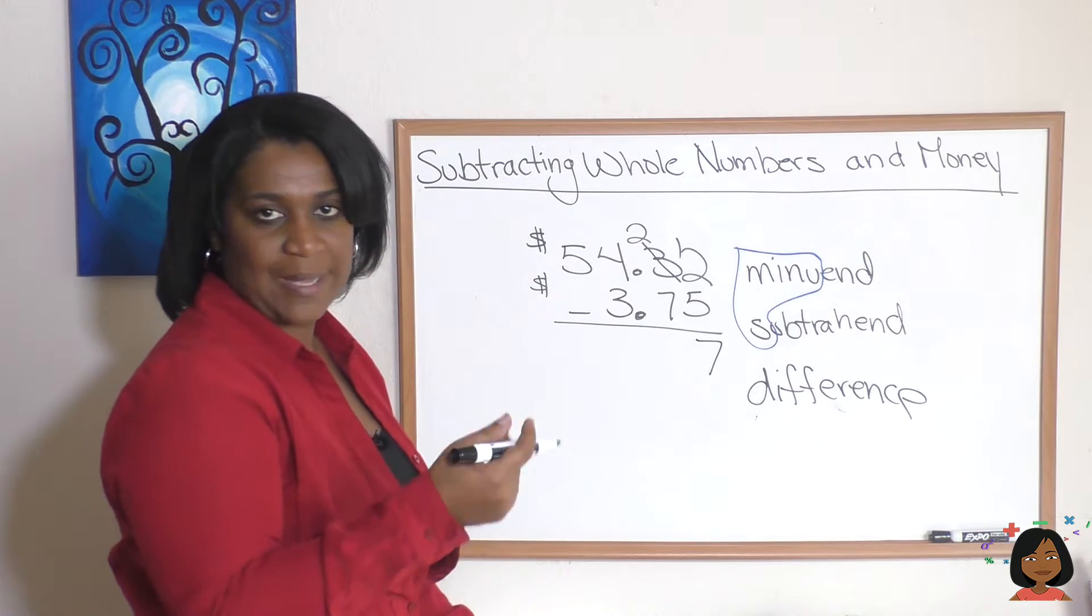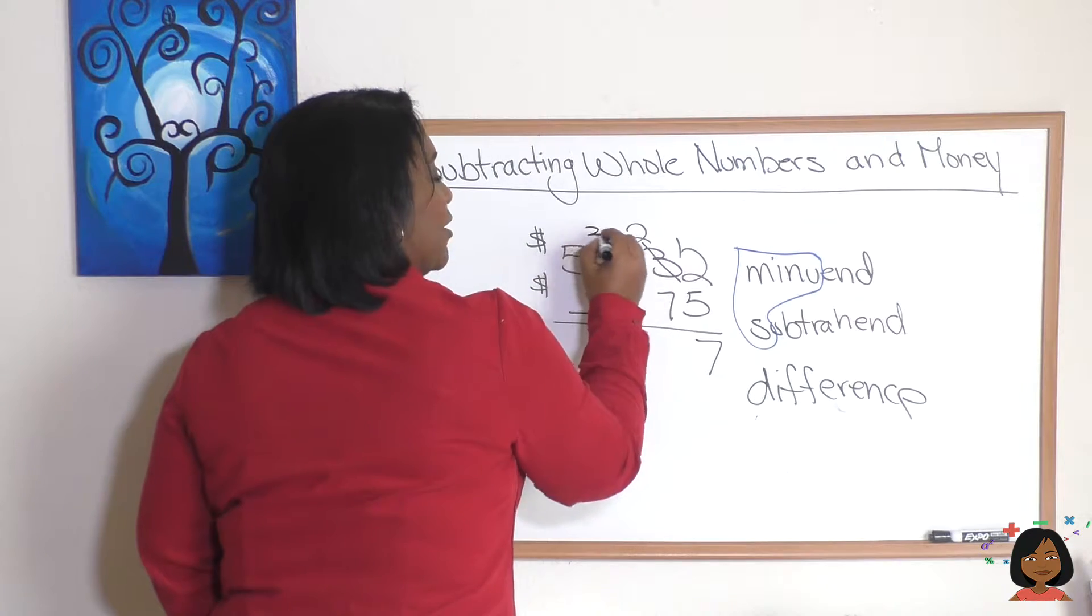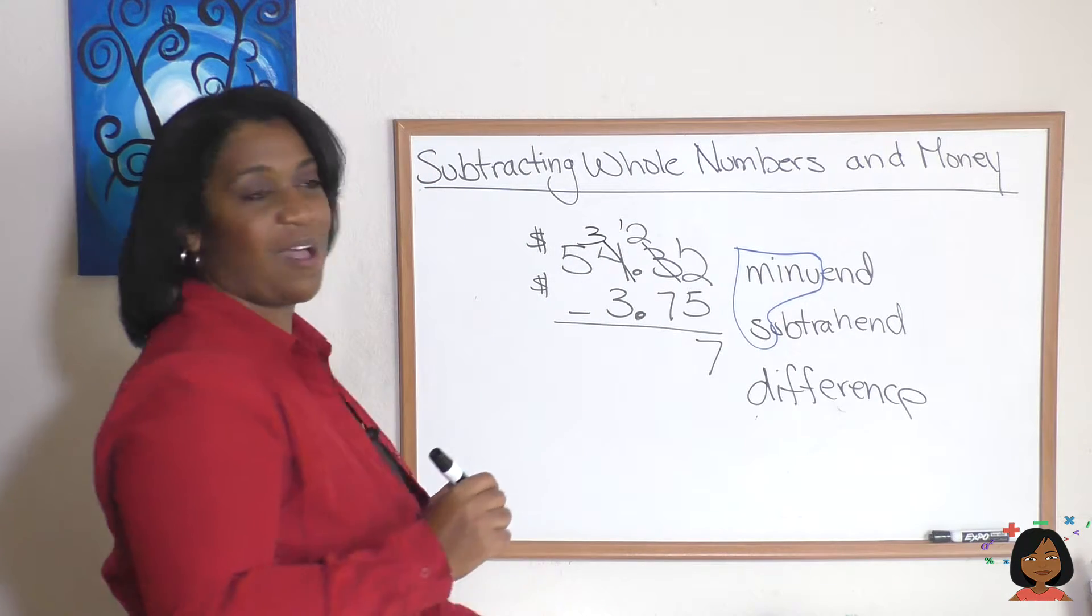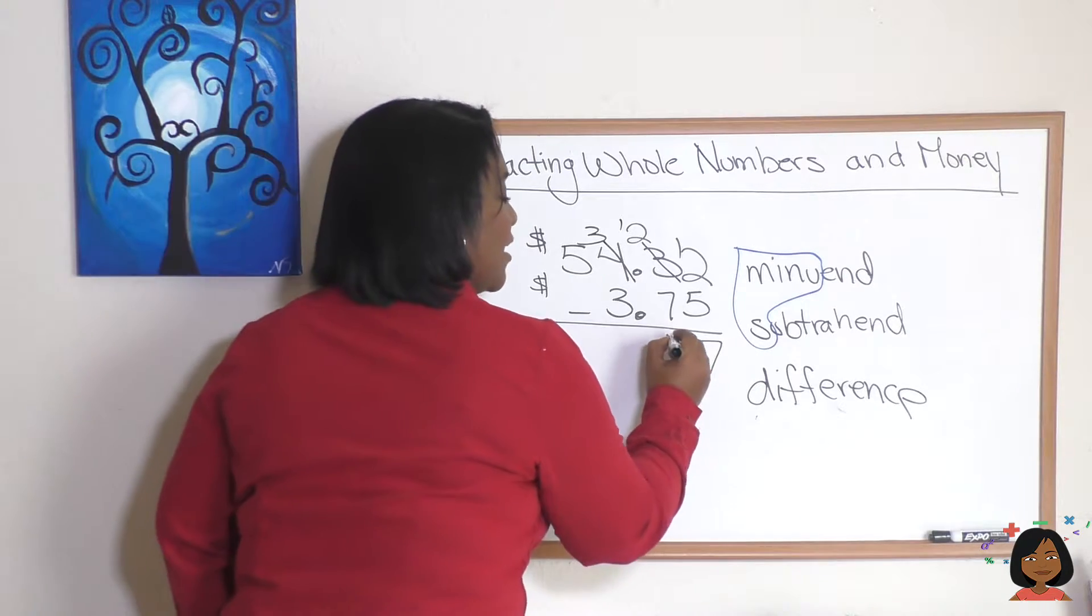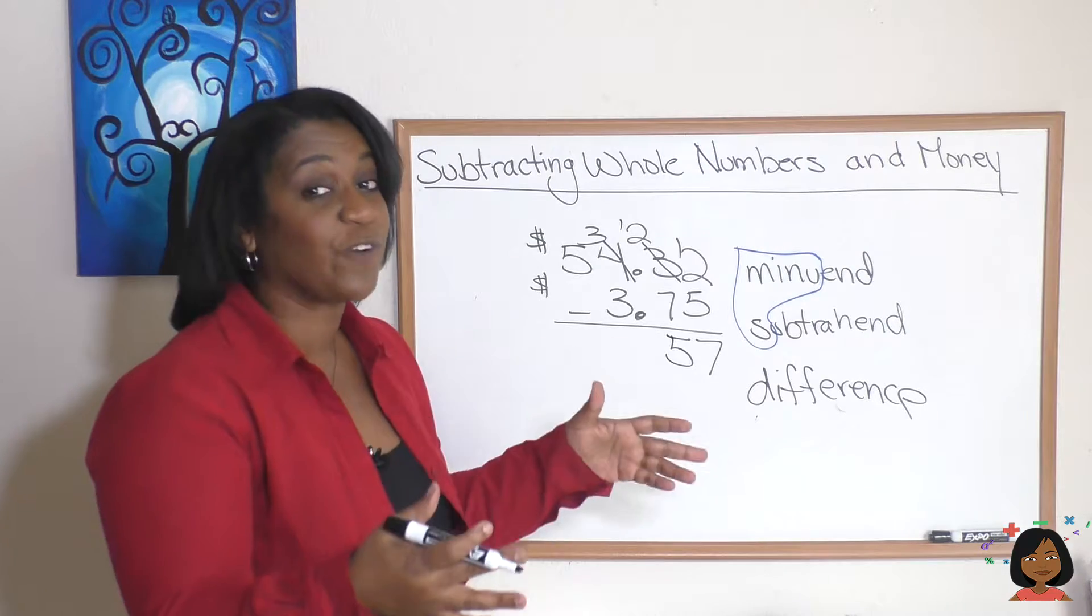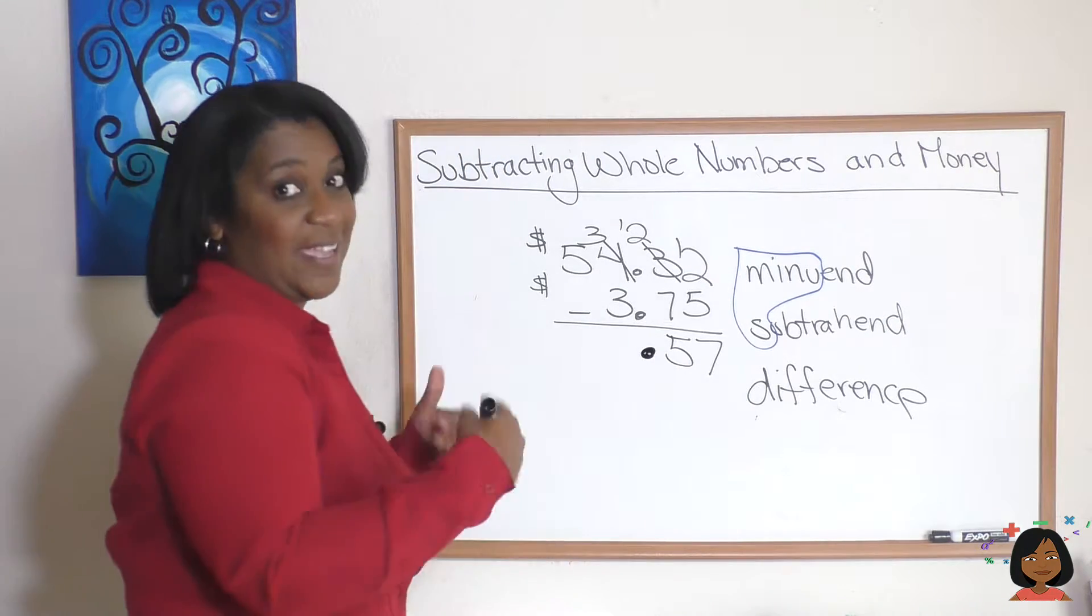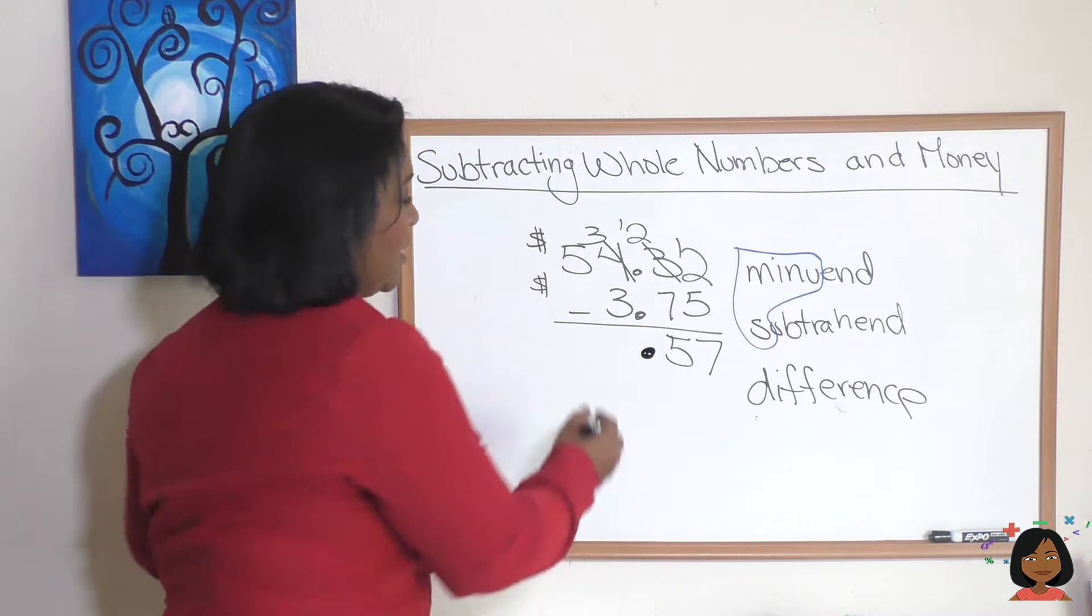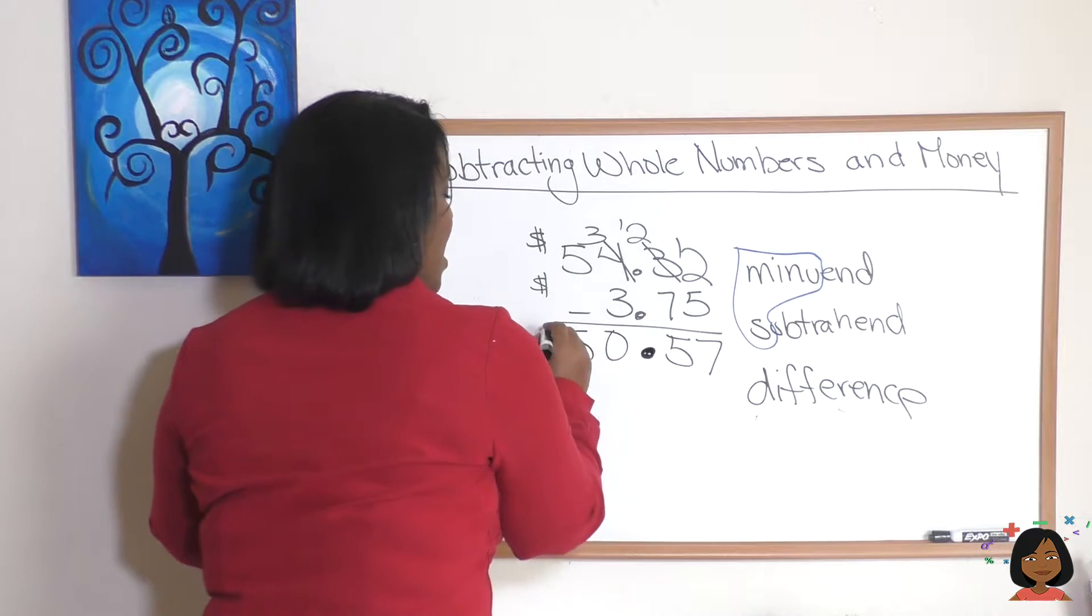So we're gonna borrow again and we're down to a three, this goes to a twelve, twelve minus seven this time is five. And you know me I hit my decimal point so I'm gonna go ahead and just write that decimal right now and keep it going. Three minus three is zero, five minus there's nothing there so it's still five.